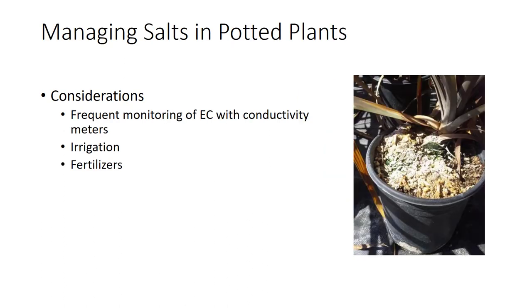Growers of potted plants work constantly to maintain a proper EC in their pots. This means frequent monitoring of EC with conductivity meters, often on a weekly basis. Where irrigation water is saline, a little extra water is added at each irrigation to leach out salts that might otherwise accumulate. In some cases, water must be treated to reduce salinity, though this is expensive. Growers also tightly manage the fertilizer program to avoid fertilizer buildup. If tests reveal that the EC has risen too high, growers leach pots with a heavy watering — watering pots heavily until water runs out of the bottom, allowing more salts to dissolve for a half hour, then repeating the heavy water application. Since this treatment leaches out all the fertilizer, it is followed by an appropriate fertilizer application.